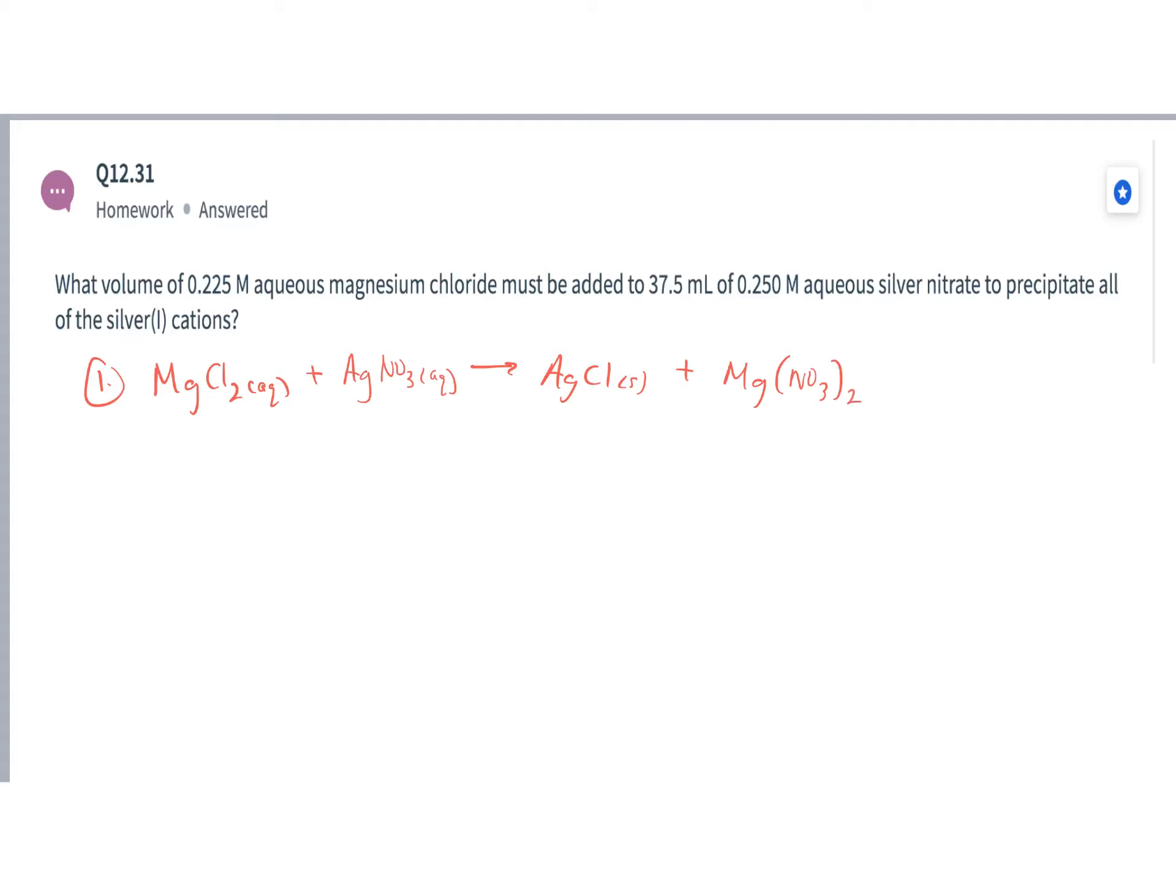To balance this equation out, I would need to put a 2 here, and I'd need to put a 2 here. And then I've got a balanced chemical equation. I need to add magnesium chloride to the silver nitrate.